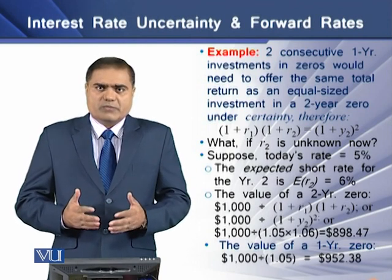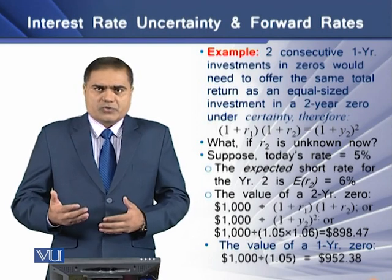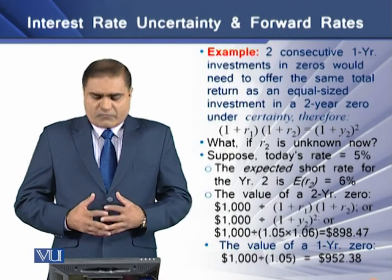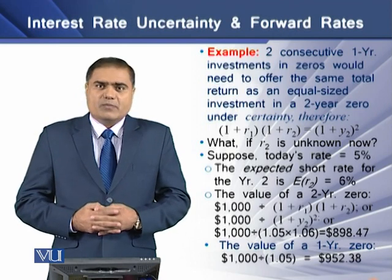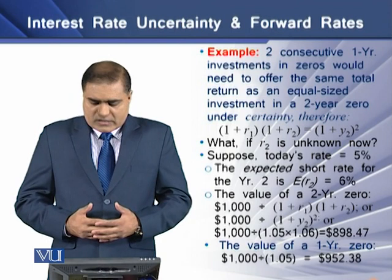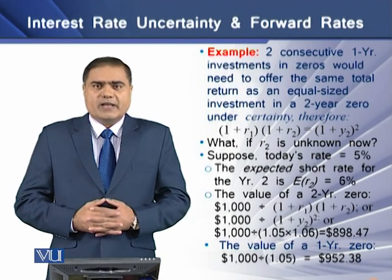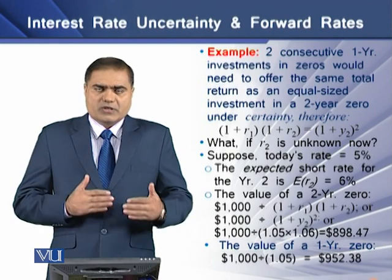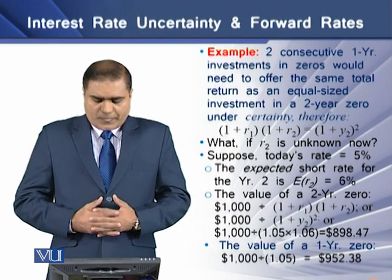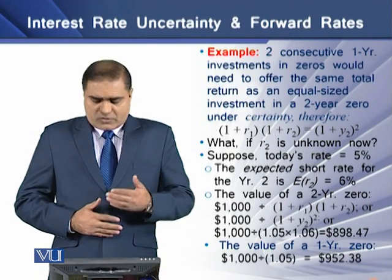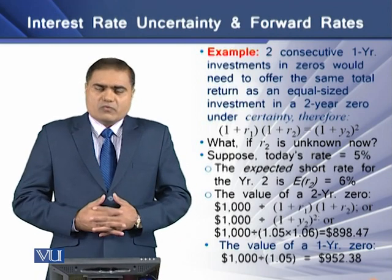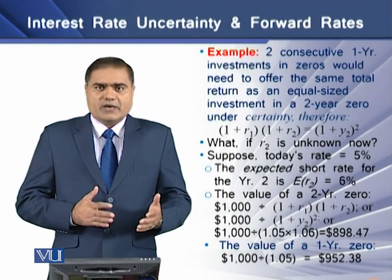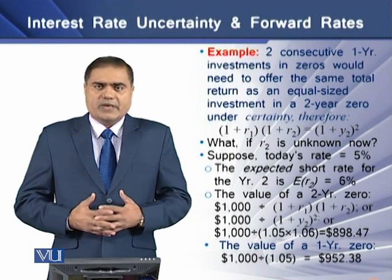Y2 here is the yield at maturity. In other words, we divide the face value with the product of 1.05 and 1.06, and the resulting value is 898.47 dollars. That is the value of the bond at time zero. The value of the 1-year zero bond would then be equal to 1000 divided by 1.05, which comes to 952.38 dollars.